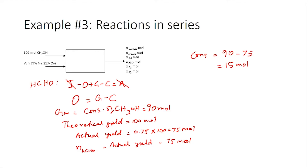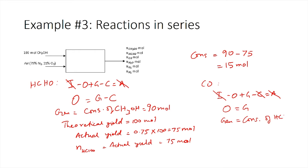We can now write the carbon monoxide balance: input – output + generation – consumption = accumulation. At steady state, accumulation = 0. There is no input of carbon monoxide and no consumption since it is only produced. Therefore, output = generation. Based on stoichiometry, generation of CO equals the consumption of formaldehyde in reaction 2, which is 15 moles. Therefore, N_CO = 15 moles.